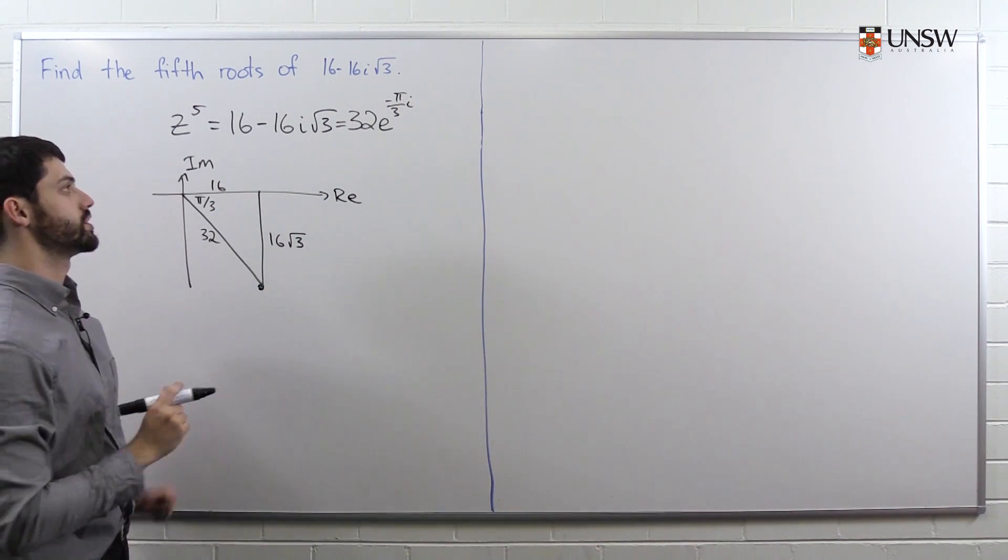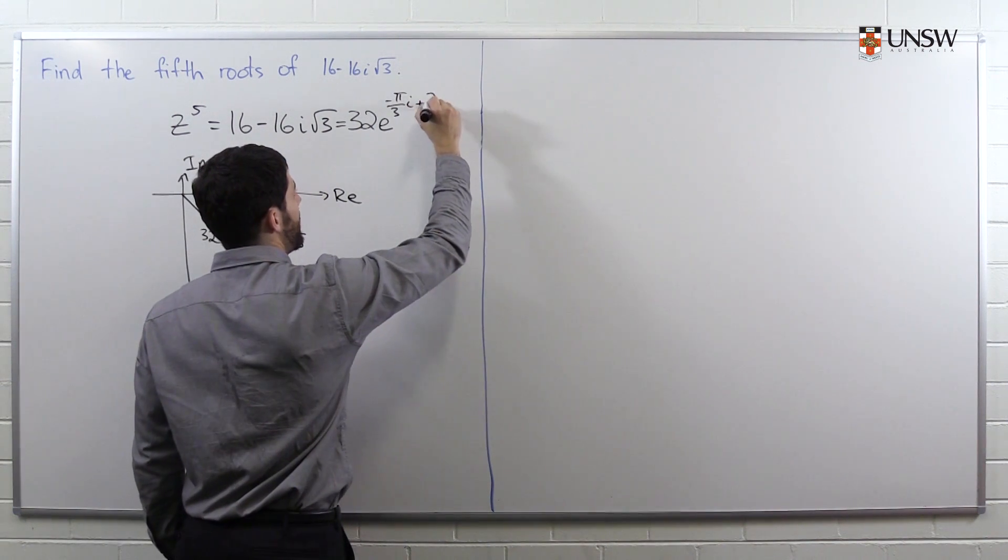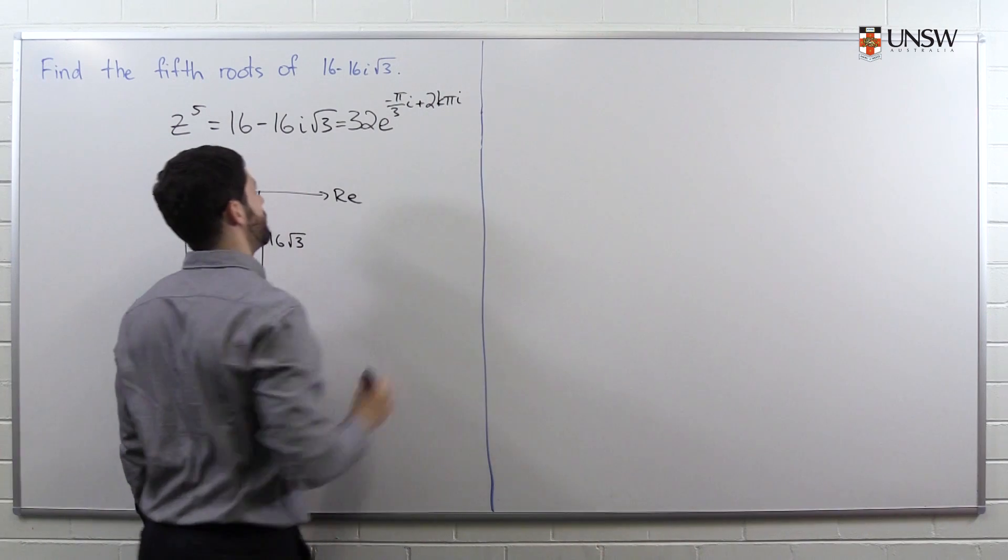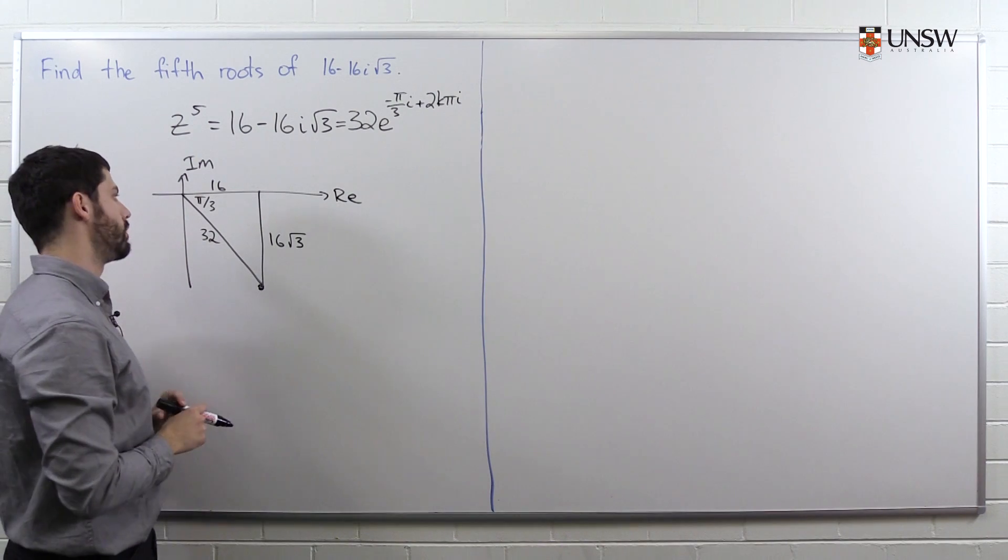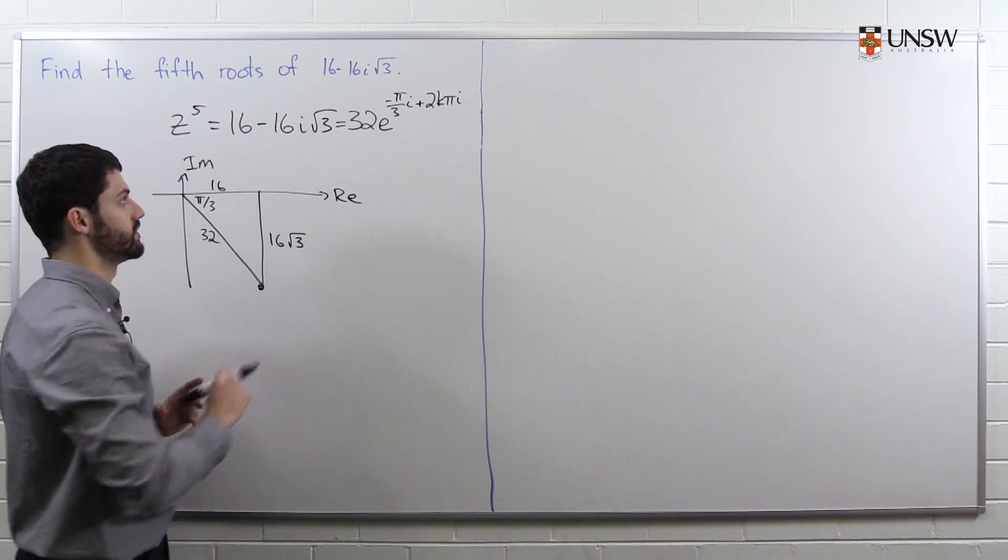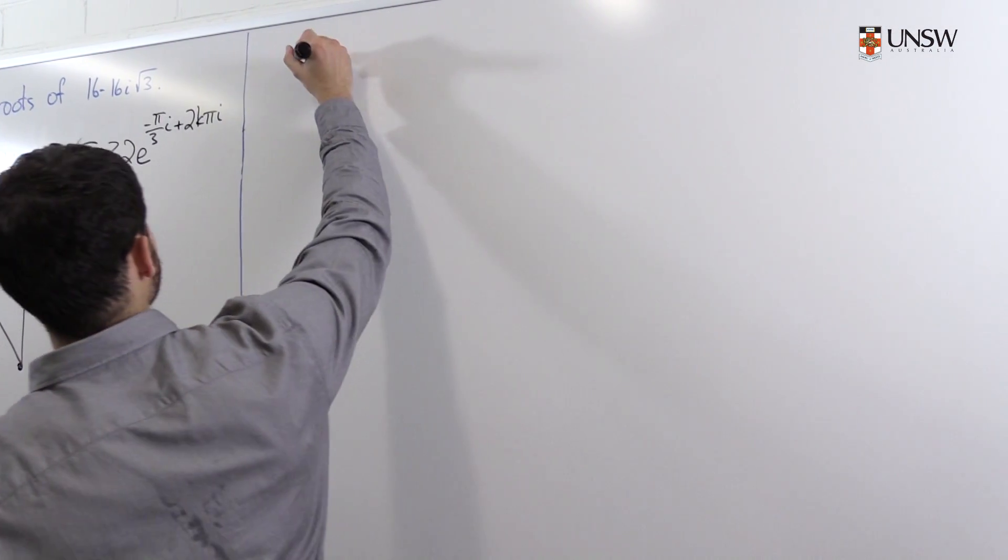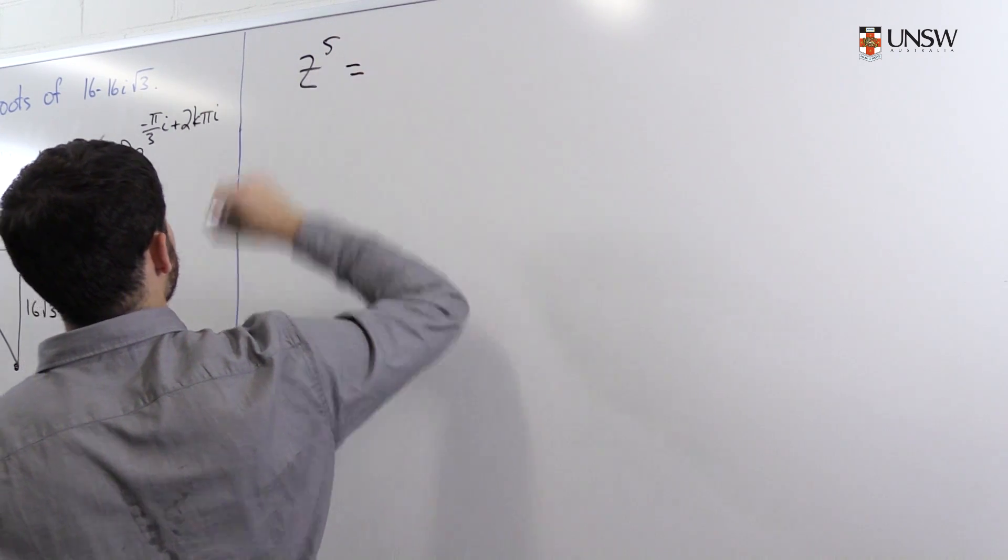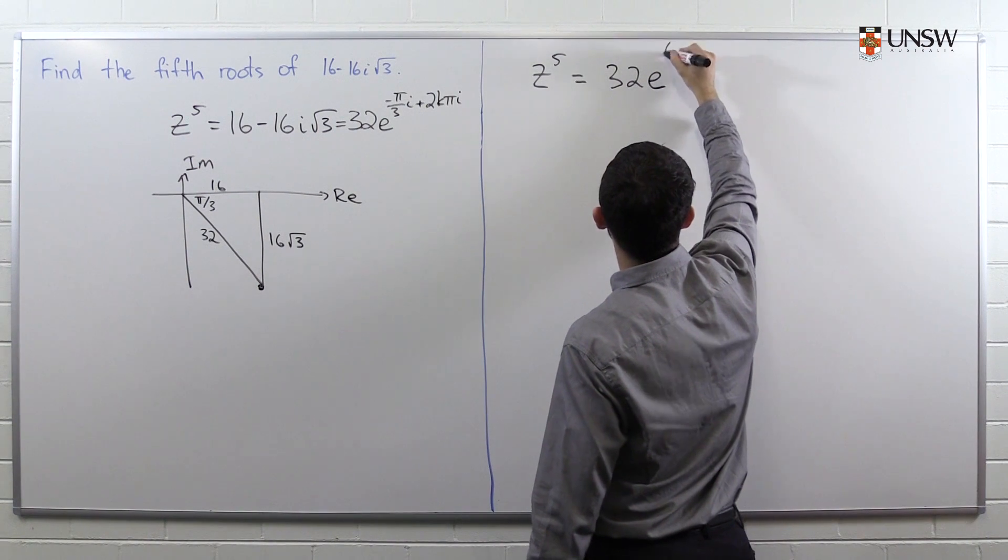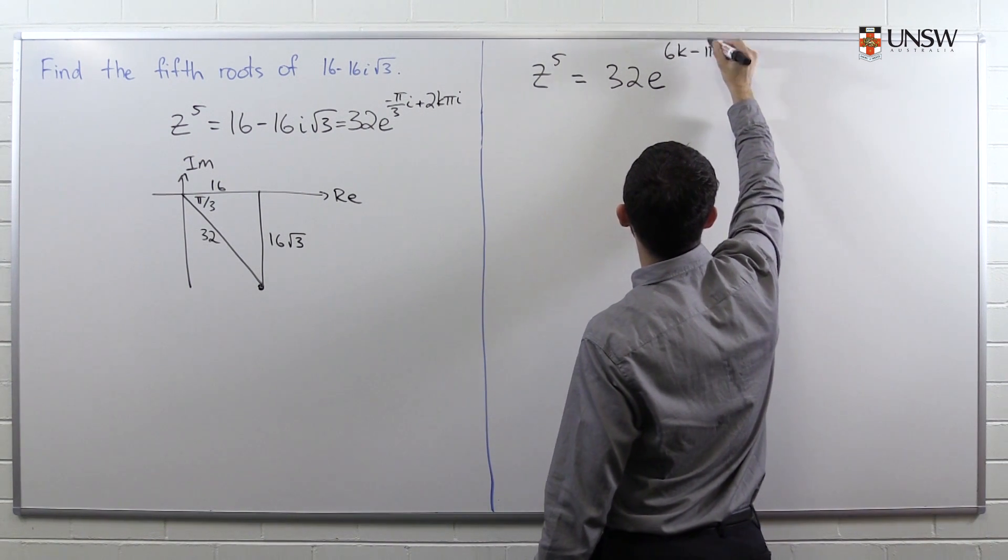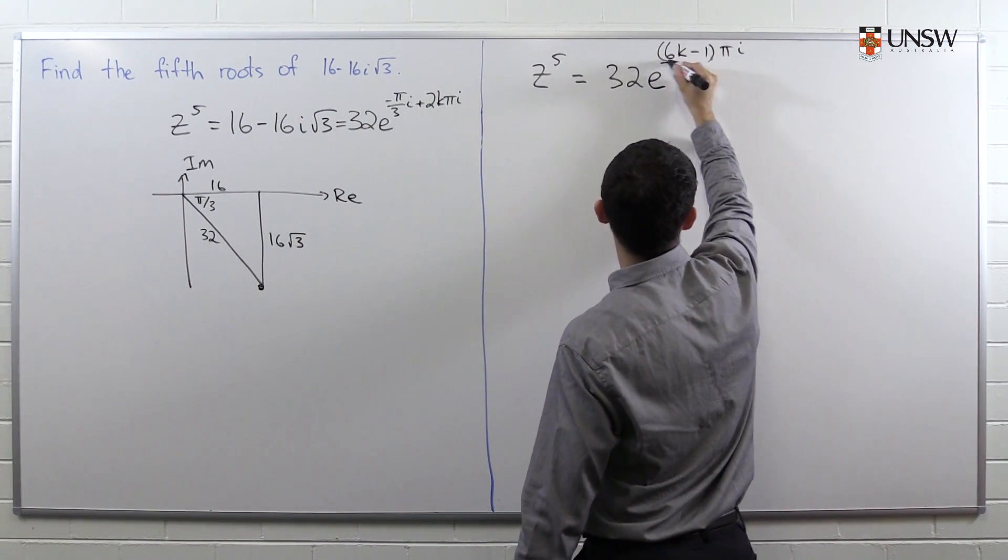And in order to do this question, what we also need to do is allow non-principal arguments, at least for now, and so we're going to add 2kπi. Because I remind you that if you add 2kπi to an argument of any complex number, you don't actually change the complex number. It's just that it's not going to be a principal argument anymore. So if we simplify this a little bit, we get z^5 = 32e^((6k-1)πi/3).